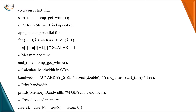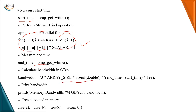To calculate the bandwidth, we store the start time using OMP_get_wtime and also store the end time. Before you start the triad operation, you calculate the normal operation. To know the amount of bandwidth, you record your start time and end time, and after performing the operation, these are used to calculate your bandwidth.